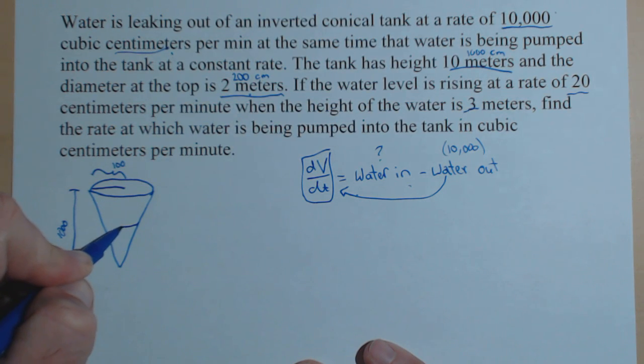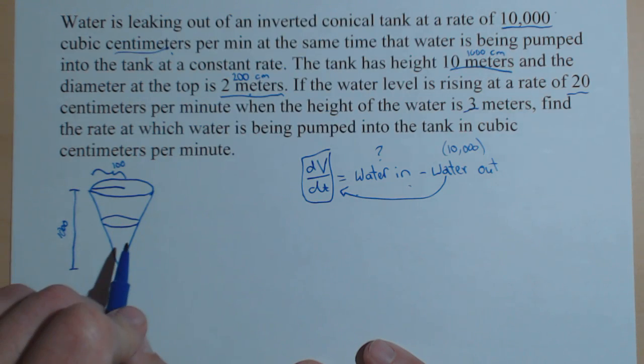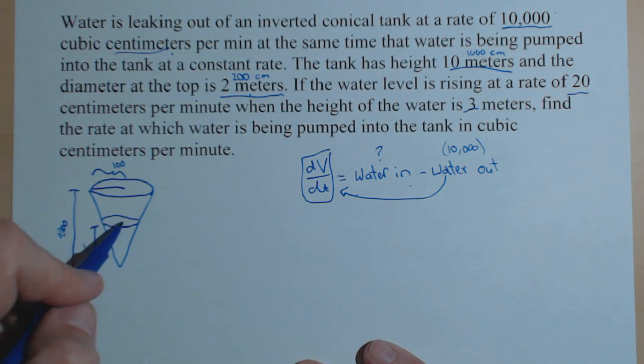Now, in here, let's pretend like the water is at this height here. And now, I want to label some variables because the level of the water is changing. So, the height of the water I'll call h. The radius of the water I'll call r.